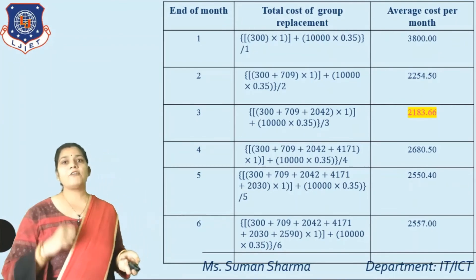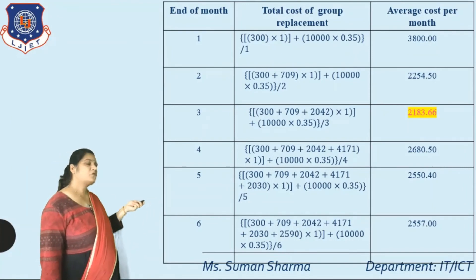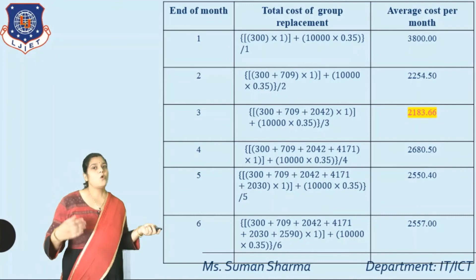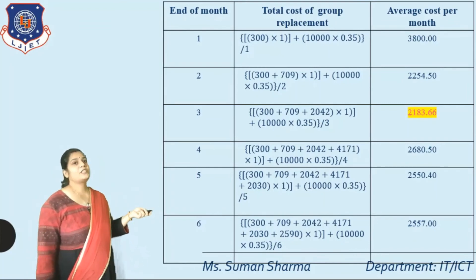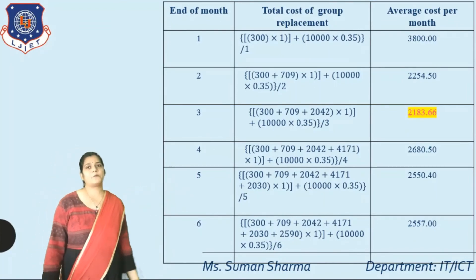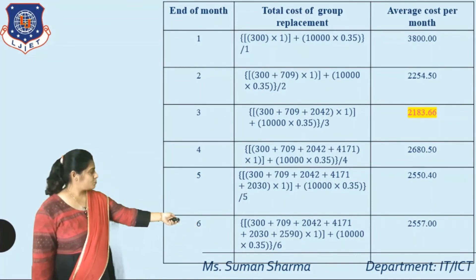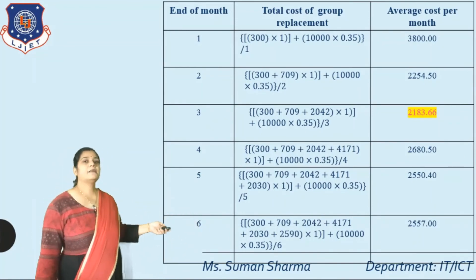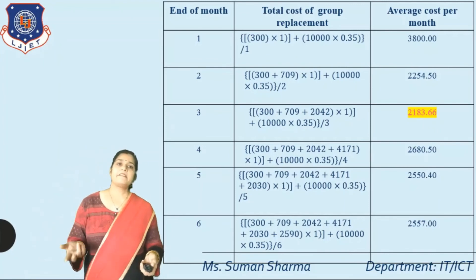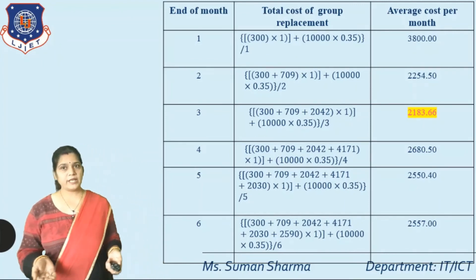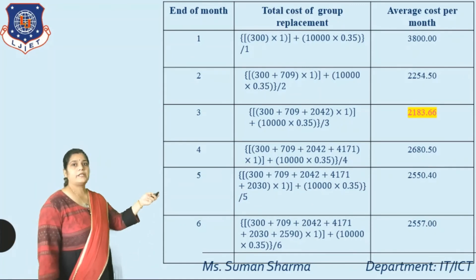Month 5: (300 + 709 + 2042 + 4171 + 2030) × 1 + 10,000 × 0.35) ÷ 5 = 2505.40. Month 6: (300 + 709 + 2042 + 4171 + 2030 + 2590) × 1 + 10,000 × 0.35) ÷ 6 = 2557.00.